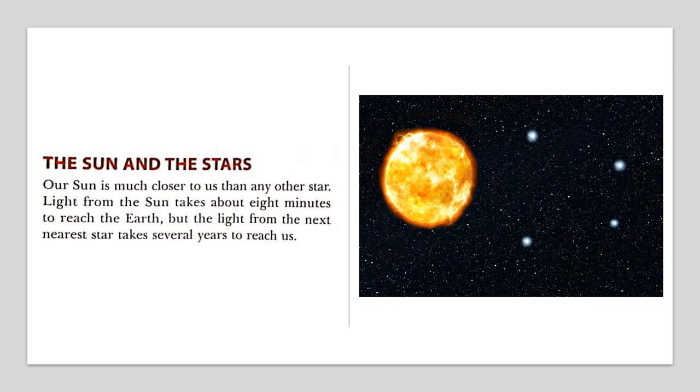Light from the sun reaches the earth in approximately eight minutes. But the next star close to the earth after the sun, its light takes at least several years to reach the earth. So what this paragraph is telling us: the sun is also a star, it is close to the earth, that's why it looks big. We can imagine how far the stars are from us.